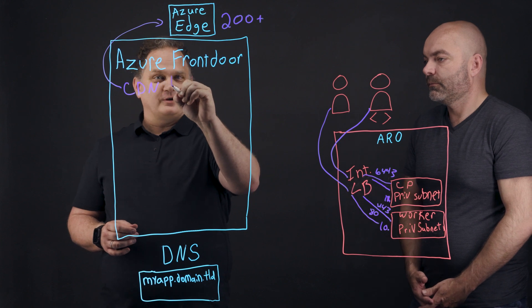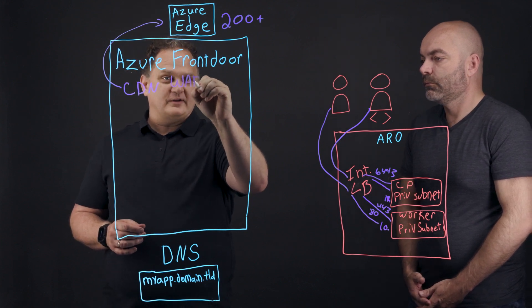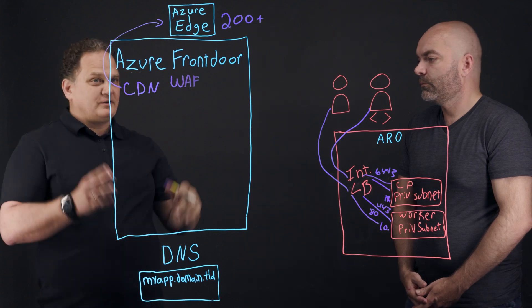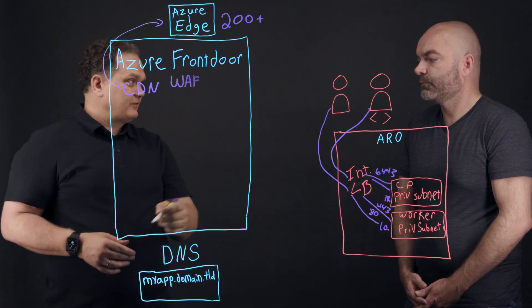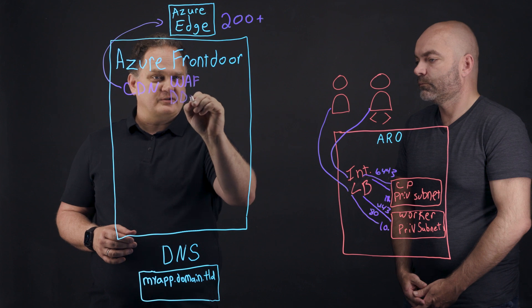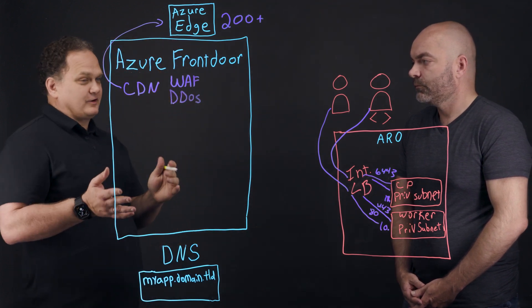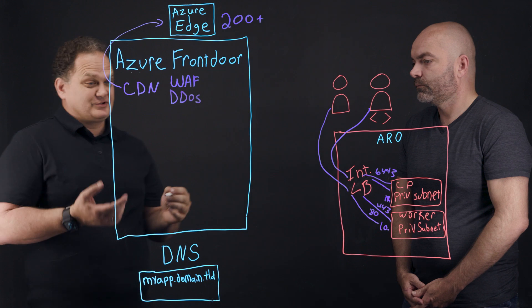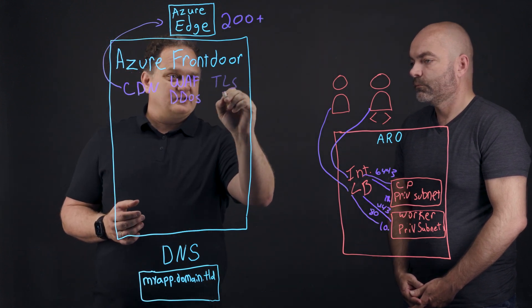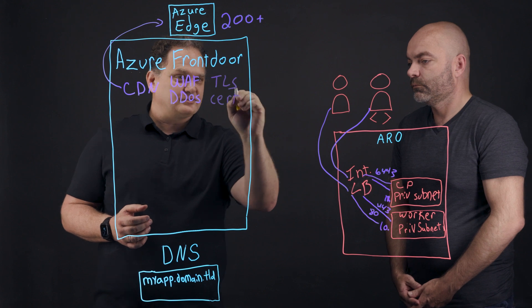Another key feature is security. Security is critically important, especially if you have an internet-facing application. Front Door includes a web application firewall as well as DDoS protection. In addition to those security layer tools, we also have certificate management, which is incredibly important. So you can do TLS termination and general certificate management.